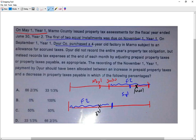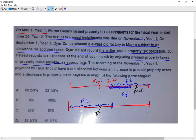The company purchased a four year old factory in Marno subject to an allowance for accrued taxes. So what we're saying is we bought a factory here, an old factory, but that factory was subject to accrued taxes. So I'm assuming they owe taxes as of June 30th, as of the prior fiscal year.